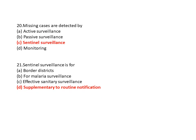Question 20: Missing cases are detected by? Option A is active surveillance, option B is passive surveillance, option C is sentinel surveillance, and option D is monitoring. So option C is the correct answer — missing cases are detected by sentinel surveillance.